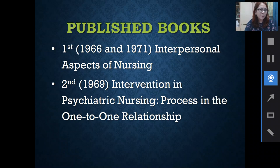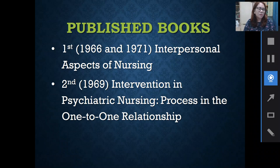Like other theorists, she was able to publish books. The first book was published in 1966 and 1971 entitled Interpersonal Aspects of Nursing. The second book was published in Psychiatric Nursing, which focused more on the process in the one-to-one relationship.